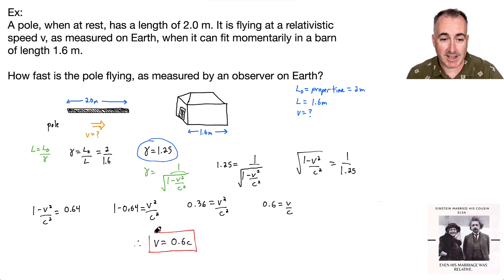So if you are flying at 60% the speed of light, if this pole is flying at 60% the speed of light, then that two meter pole, as measured by the pole at rest, will appear to be only 1.6 meters long, only to someone who's not moving, someone who's watching it fly by. It'll appear shrunken or contracted.